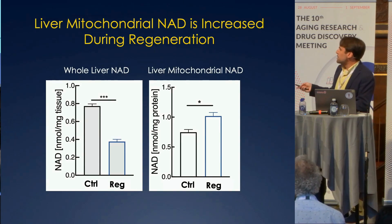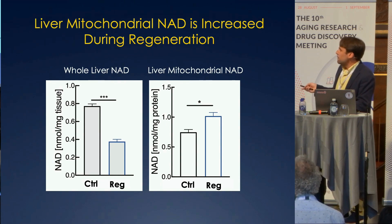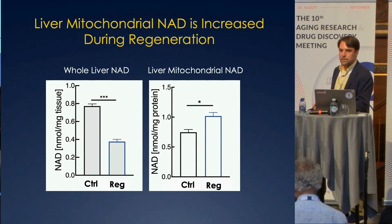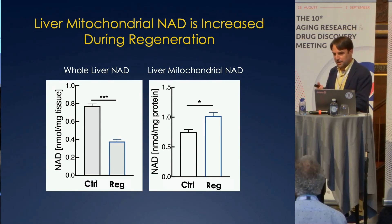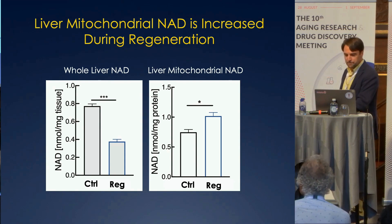This is the whole liver NAD result where when you regenerate, NAD is dropping. But if you look at the mitochondria from the same time point, NAD is actually going up, even though the total pool is going down. So it seems like the liver, in response to regeneration, actually wants to put more NAD into the mitochondria.